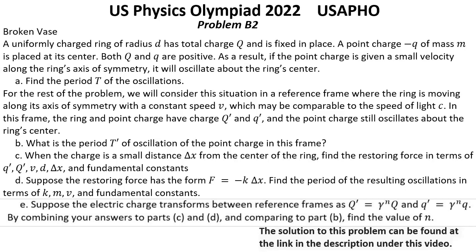Problem B2: Broken Ways. A uniformly charged ring of radius D has total charge Q and is fixed in place. A point charge negative Q of mass M is placed at its center. Both BQ and Q are positive. If the point charge is given a small velocity along the ring's axis of symmetry, it will oscillate about the ring's center.